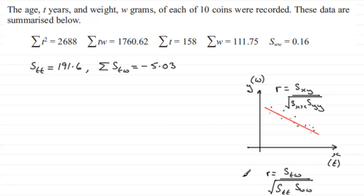So we just need to put in our values for STW. STW, we worked out in the previous part, is minus 5.03. And then we've got to divide this by STT, we worked that out in the previous part, 191.6, and that's multiplied by SWW. And they gave that as a summary statistic at the beginning, 0.16.